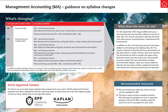The section and sub-area where changes are being made are source of data and summarizing and analysis of data. For the September 2021 to August 2022 exam year, a new learning outcome has been added on the source of data. You may be required to describe the three main sources: machine and sensor, transactional, and human or social. Also you have to describe the five characteristics of big data, namely volume, variety, velocity, value and veracity.